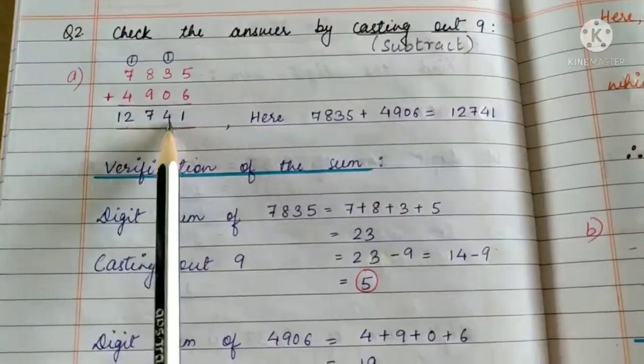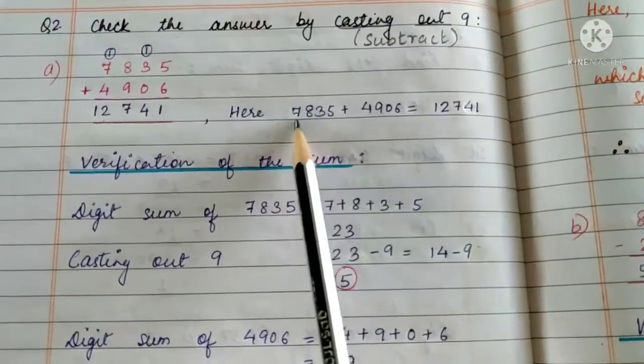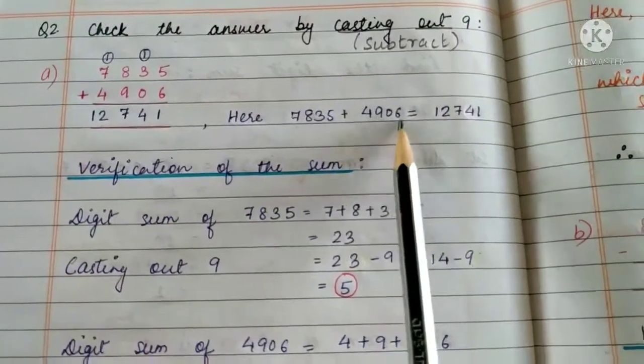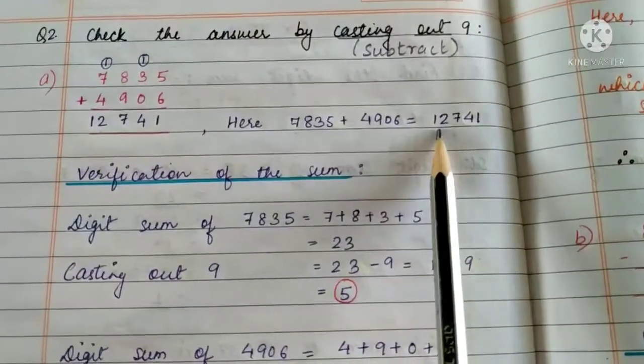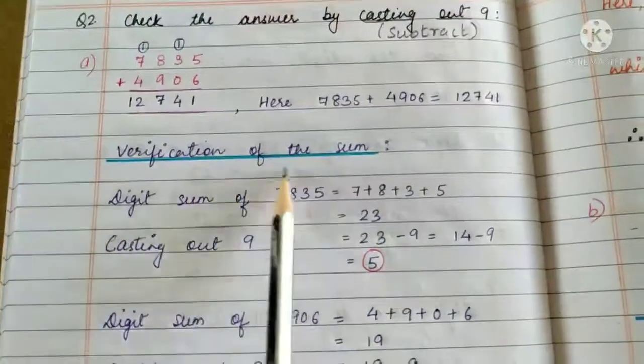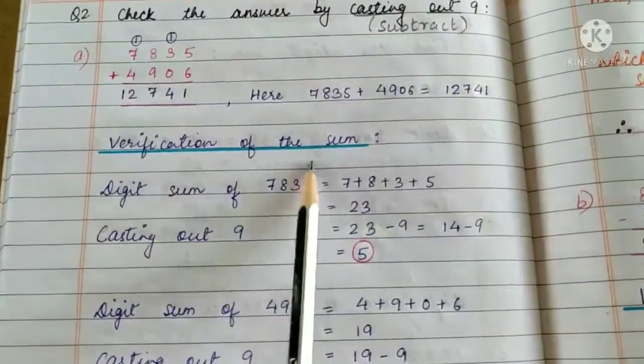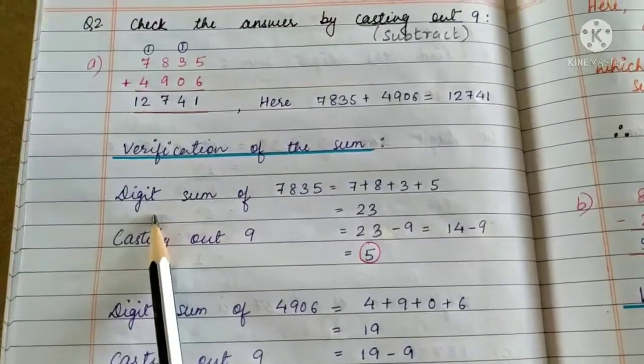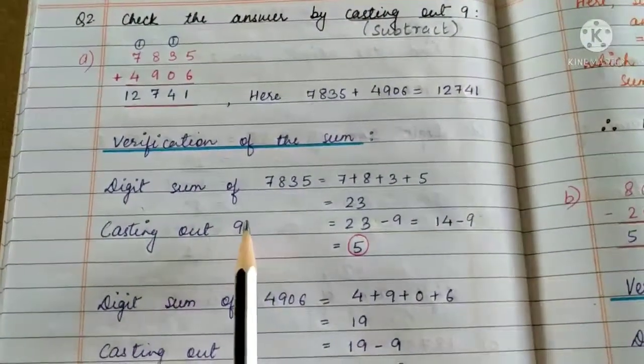So we have 7835 + 4906 = 12741. Now how do we check the answer? How do we verify the sum? We will first find out the digit sum of these two addends.